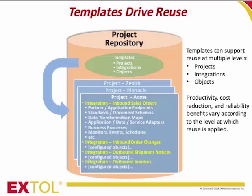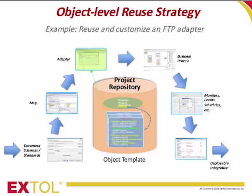Productivity, cost reduction, and reliability benefits vary according to the level at which reuse is applied. The level at which you apply reuse is possibly the most important decision you make in terms of achieving efficient migration. The lowest level of reuse is the object level. Here we see an example of reusing an FTP adapter — we reference an adapter created for an earlier project, change the URL and perhaps some FTP dialog parameters, and create a new instance based on the old one.